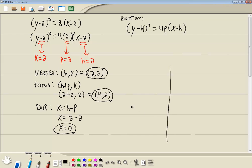So let's sketch this now. The vertex is 2, 2, which is right there. Our focus is 4, 2. It will be right there. And our directrix is x equals 0, which happens to be the y-axis.